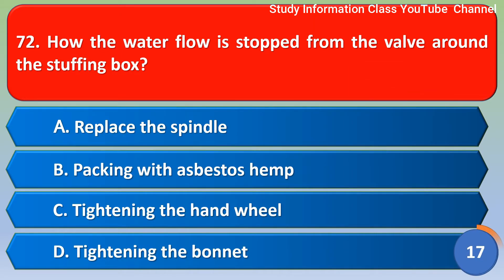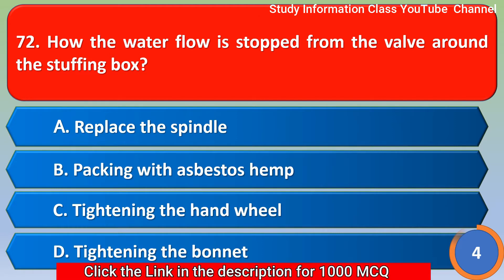Next question: How is water flow stopped from the valve around the stuffing box? Option A: replace the spindle, Option B: packing with asbestos, Option C: tightening the wheel, Option D: tightening the board. The correct answer is Option B, packing with asbestos.